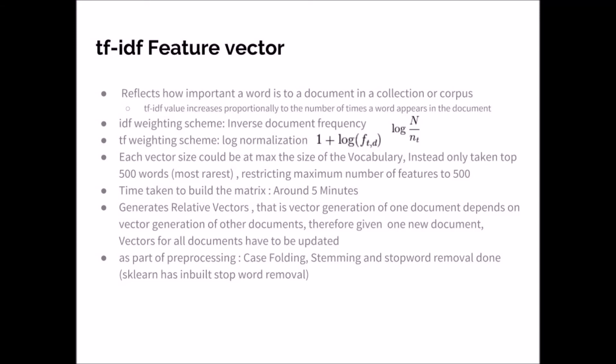First, TF-IDF vectors. The weighted schemes we chose are as mentioned. These vectors could be as long as the entire vocabulary. So we only took 500 most rarest diverse words as features. It takes 5 minutes to build the entire term document matrix. However, note that the vectors are relative in nature.